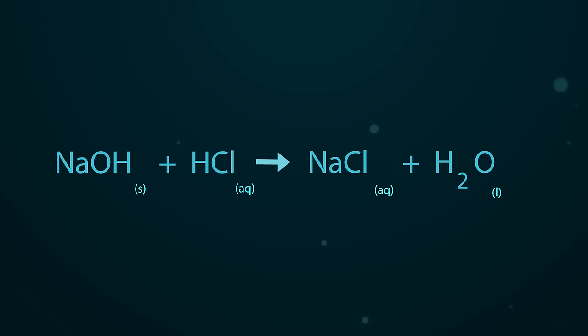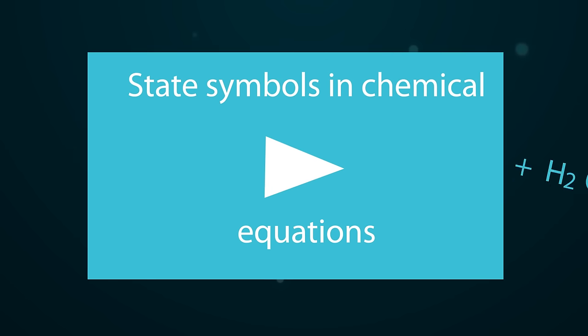The little letters in brackets are state symbols. They show the state of matter of each product and reactant, and this is covered in more detail in our lesson, State Symbols in Chemical Equations.